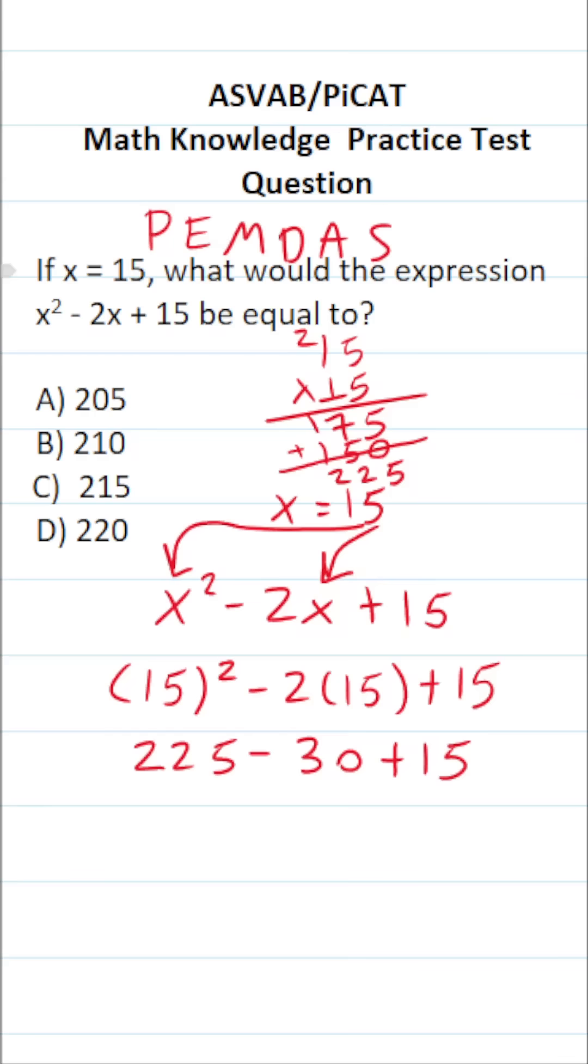You do parentheses first, exponents next, multiplication and division as they appear in the expression from left to right, and then finally, addition and subtraction as they appear in the expression from left to right. That is to say, they're treated as equals. Well, in this case, we only have subtraction and addition left, and we treat them as equals, so we're just going to work them out from left to right. So in other words, I'm going to do 225 minus 30.